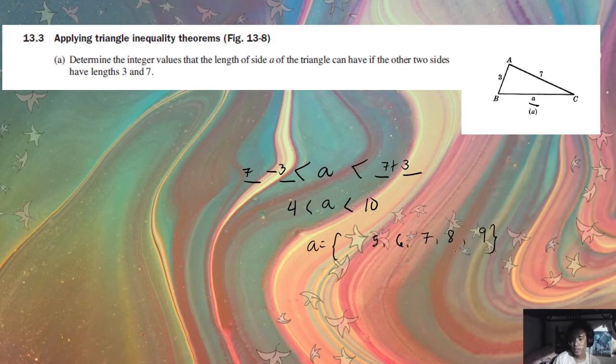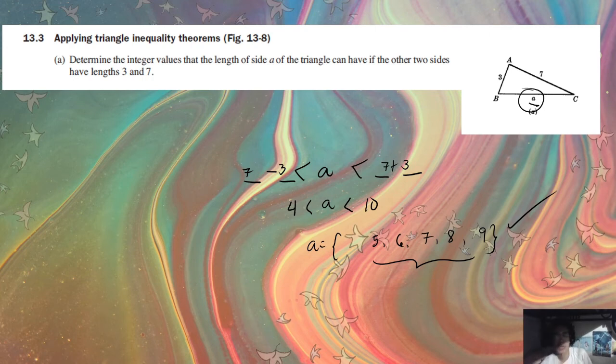And if you try to substitute all of these five values here, you would see that all of them would create or would make the triangle exist. The triangle would be created given these five side measurements, or there will be no rules violated if you use 5, 6, 7, 8, or 9 as the values for letter A. Thank you.